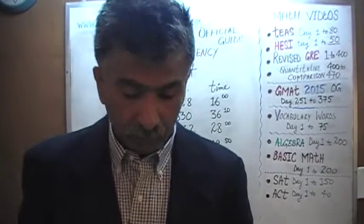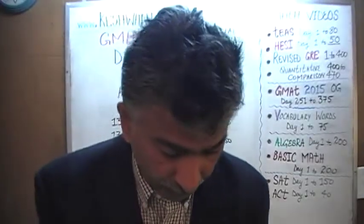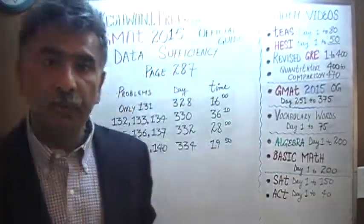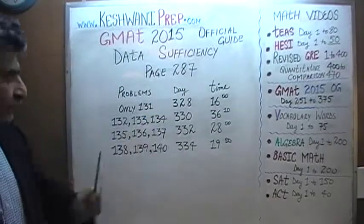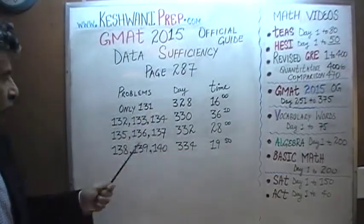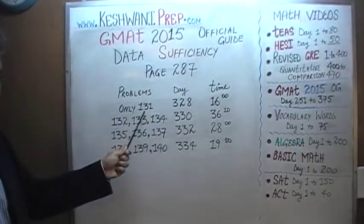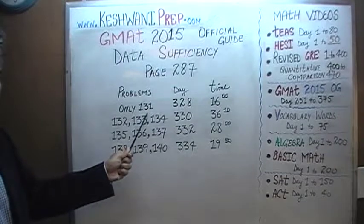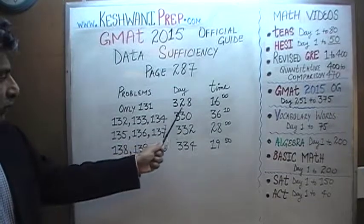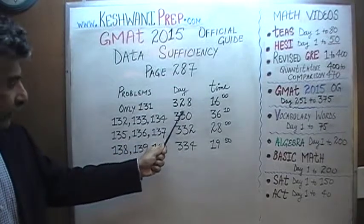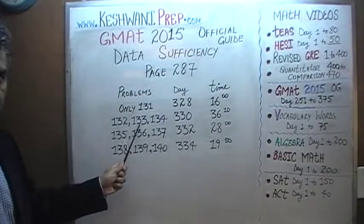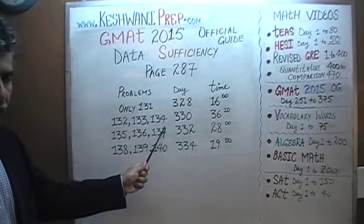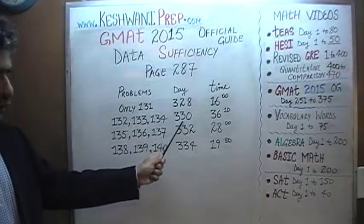Right now we are going to look at all the data sufficiency problems appearing on page number 287. On page 287 you will find problem number 131 — the solution to problem 131 is on day number 328. You will find the solutions to problems 132, 133, and 134 on day number 330.